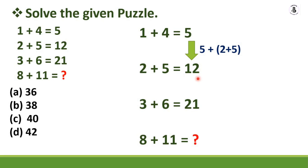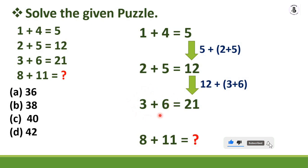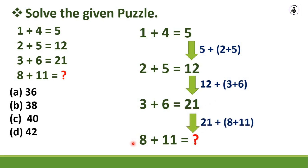Continuing the same pattern: 21 is the previous answer, and 8 + 11 = 19, so 21 + 19 = 40. The answer is 40, which is option C — the right answer.